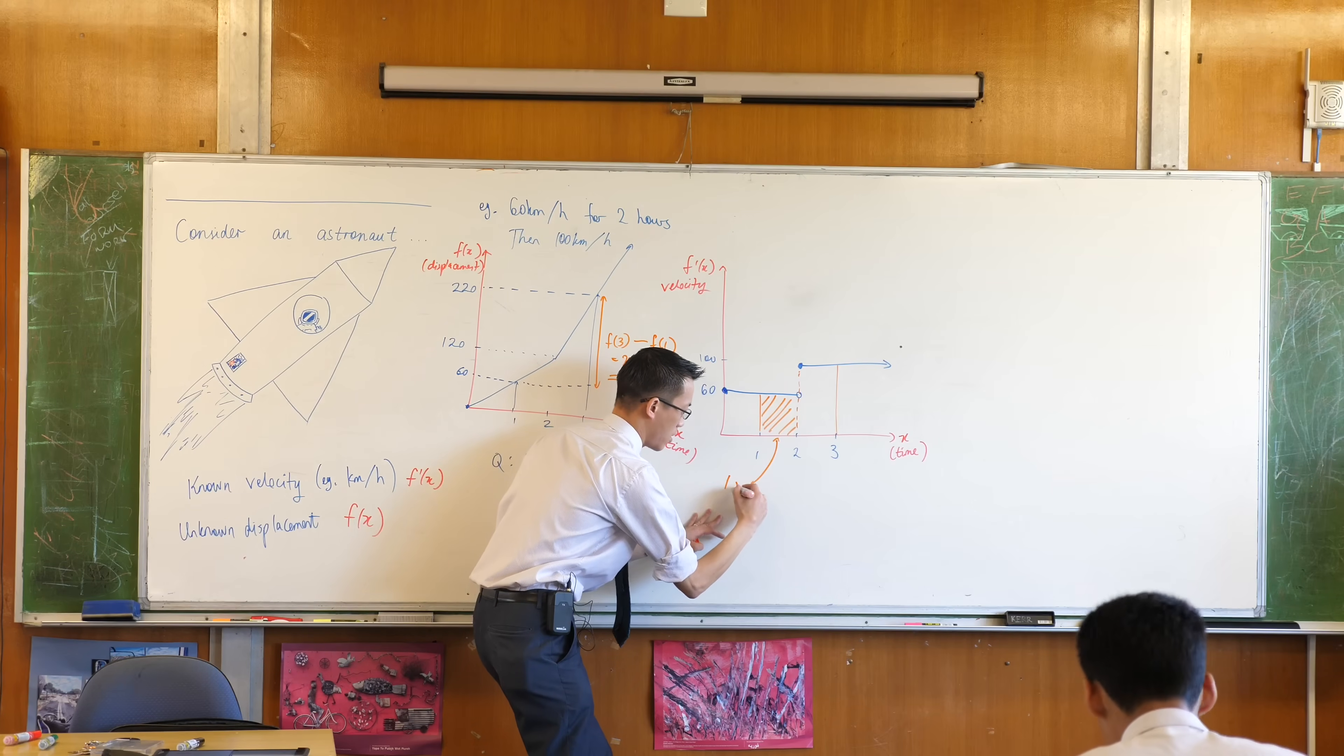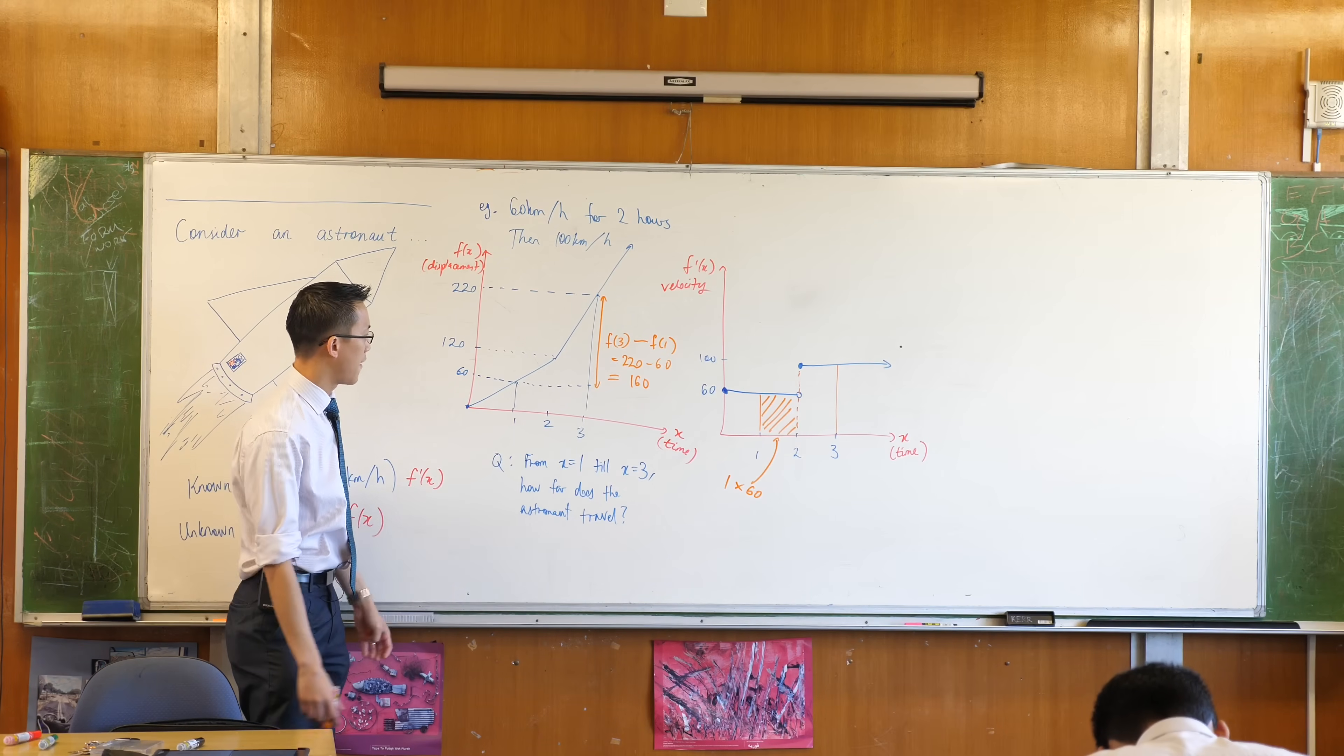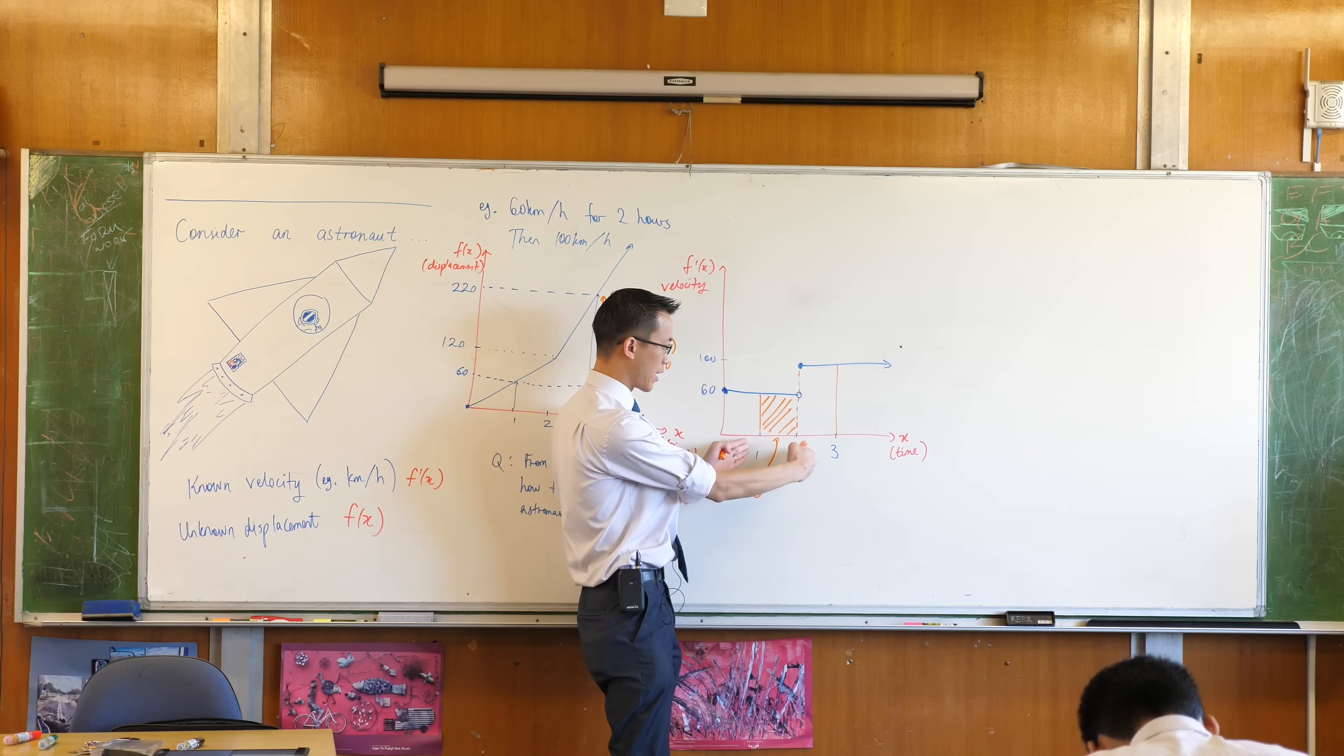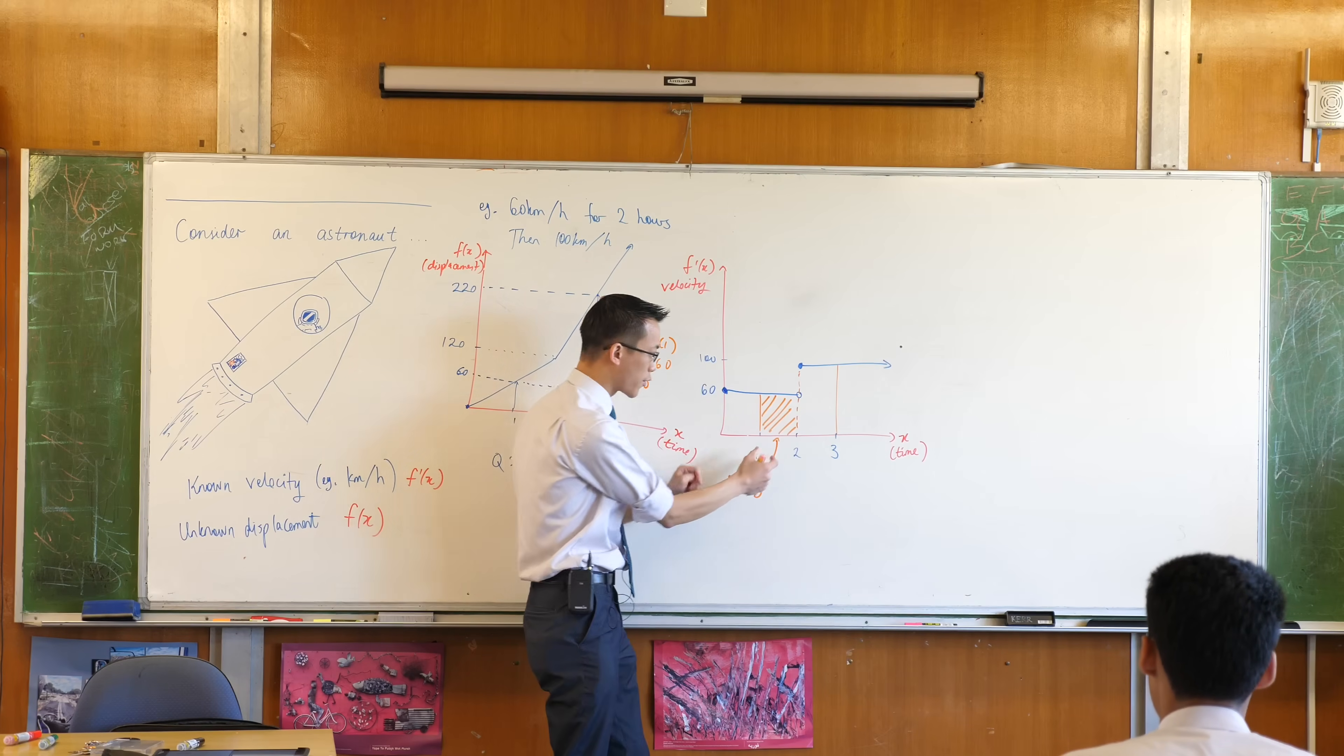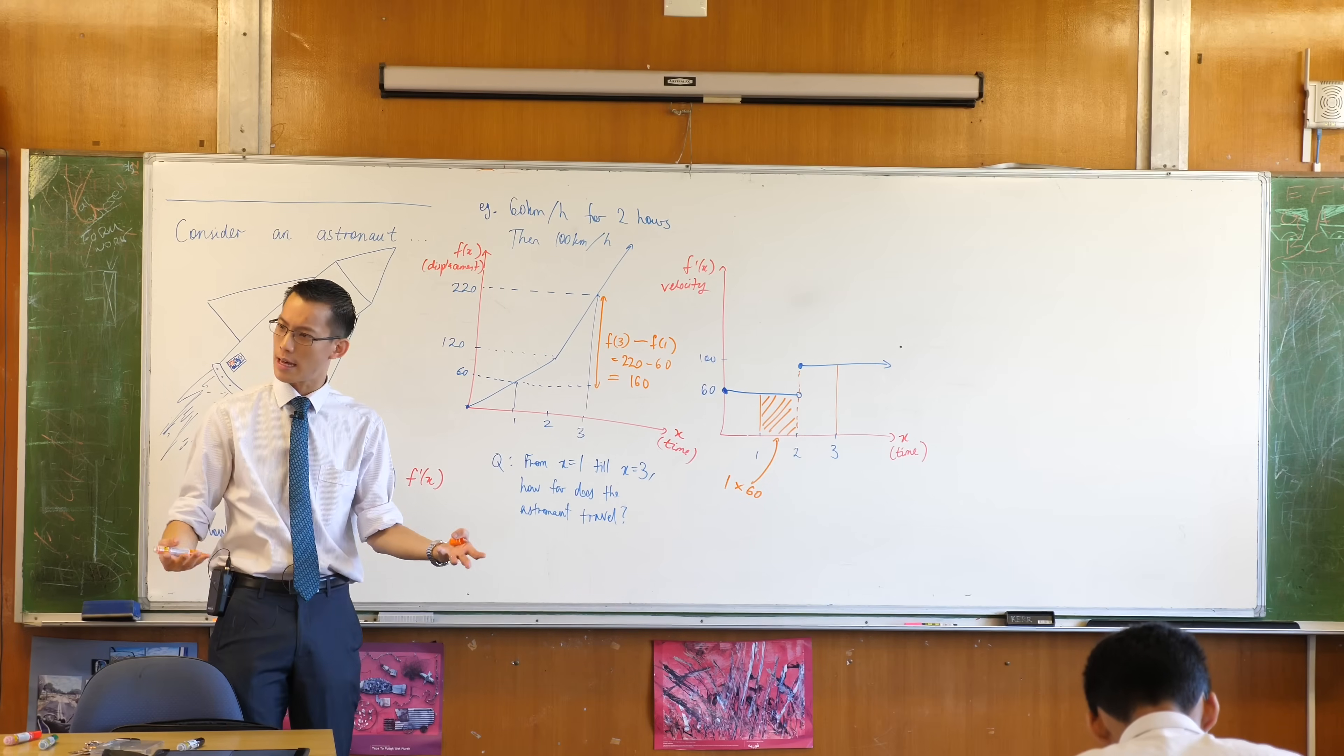One hour times 60 kilometers per hour. Now, please note: had I asked you for a different spot, say from one and a half hours to three hours, what would I have done? Instead of one times 60, I would have gone half an hour times 60, which would be 30 kilometers - which is how far you travel at that speed in that time.